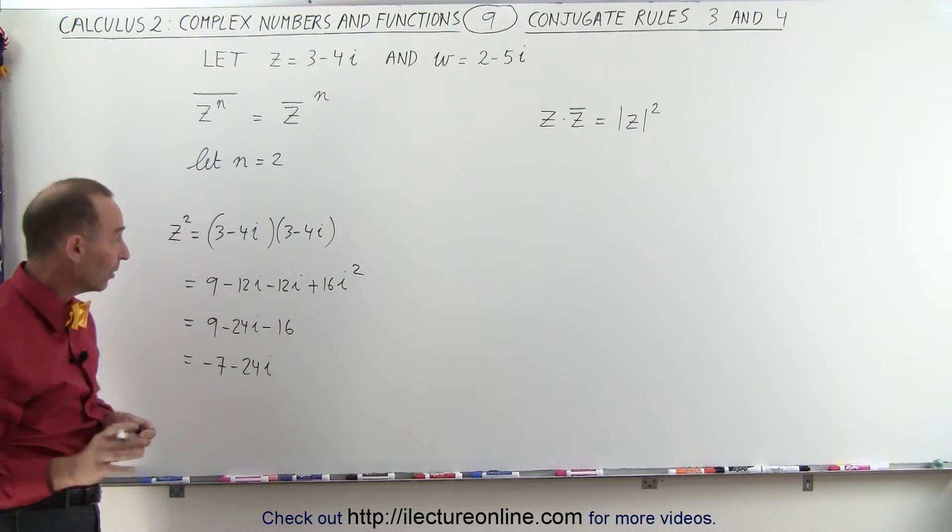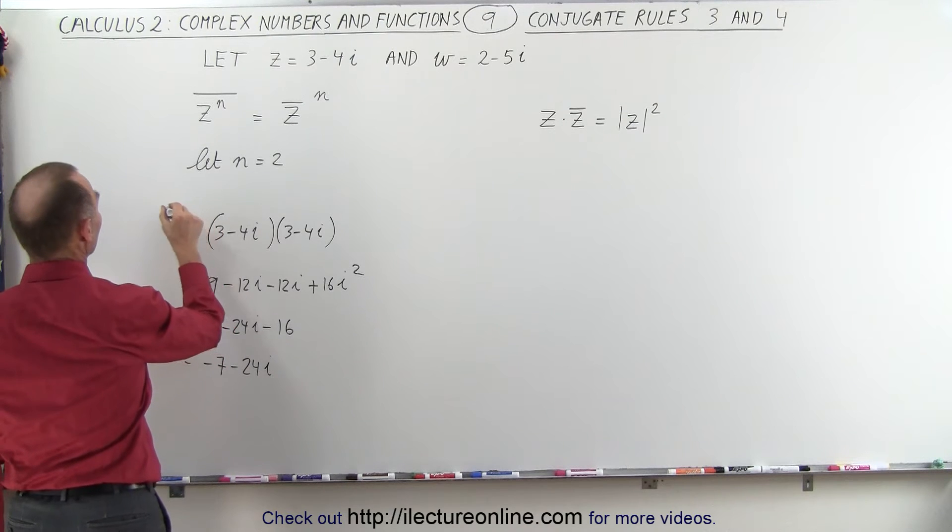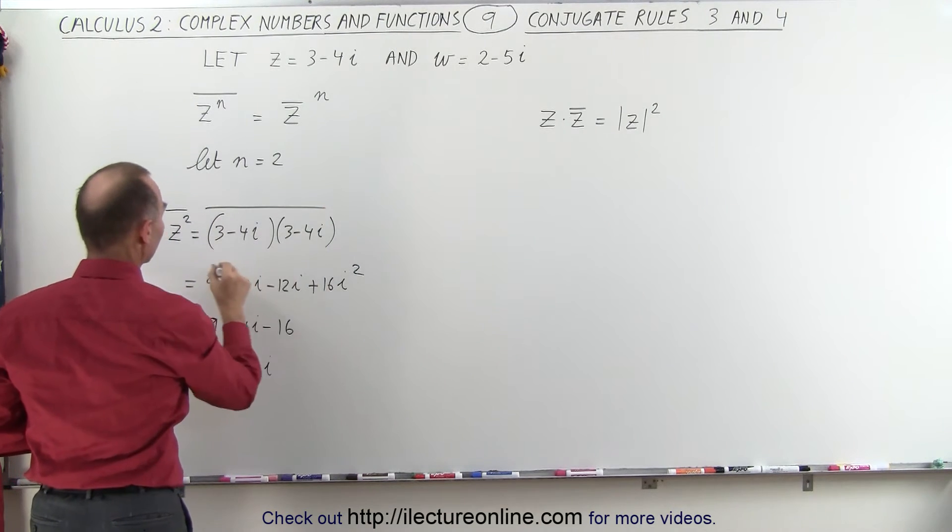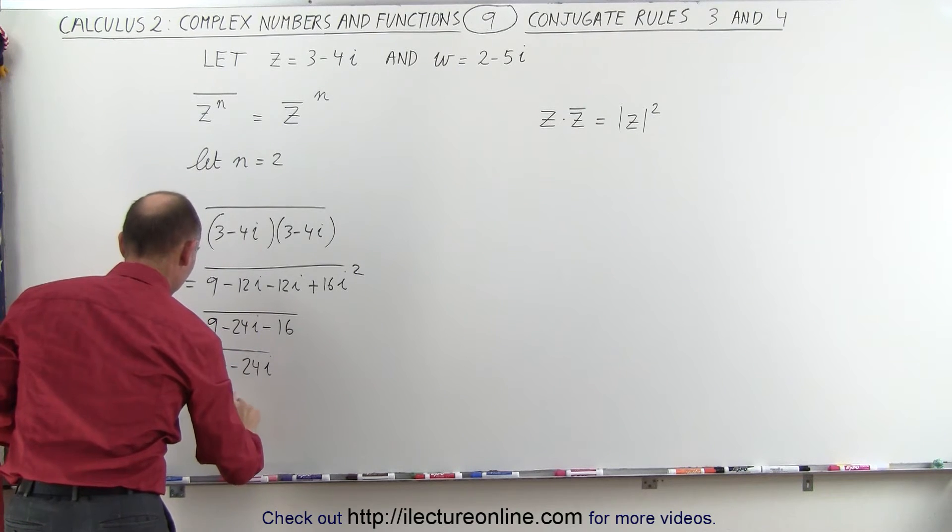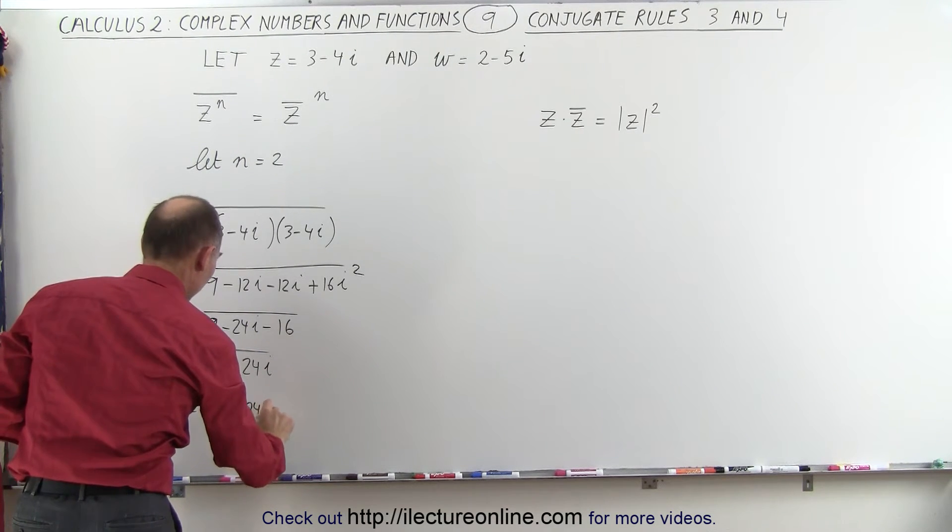And if we now take the conjugate of that, this gives us minus 7 plus 24i.